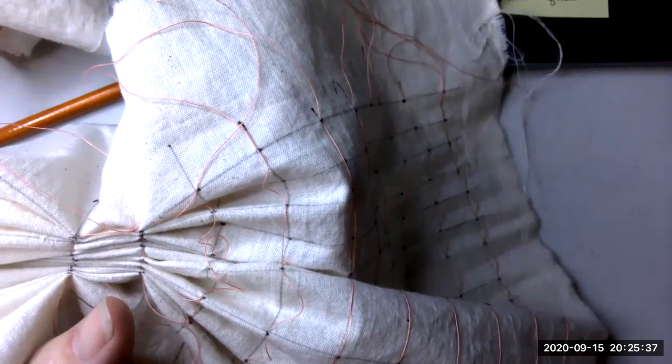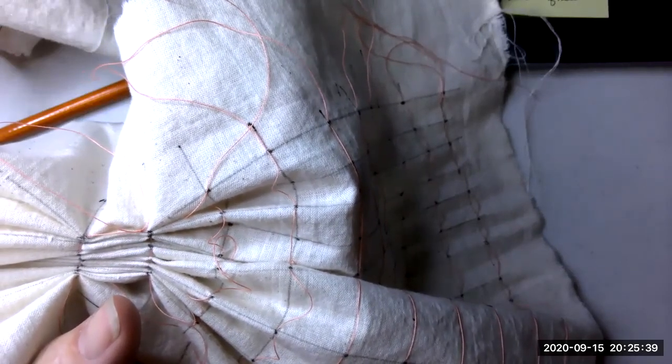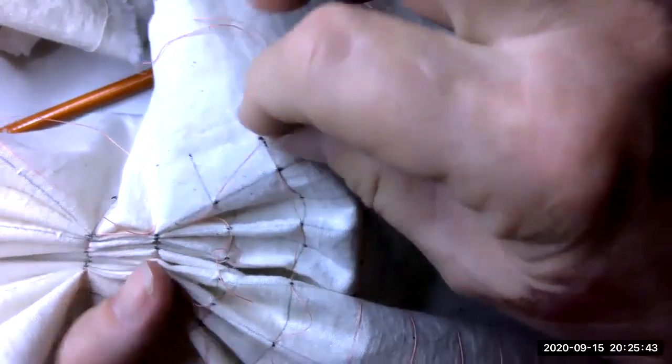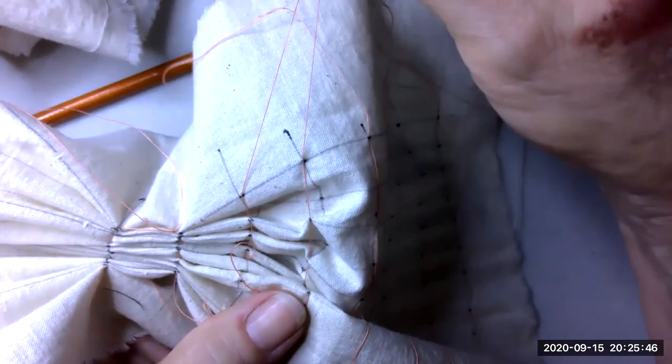So I'm going to continue pulling the pairs of threads, and you do need pairs in order to tie them off. So when I made my grid, I made my pairs.